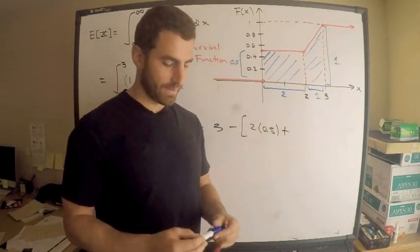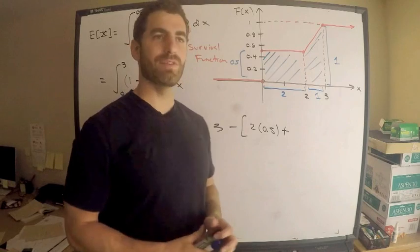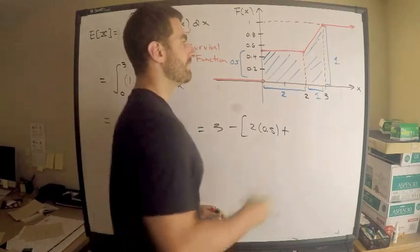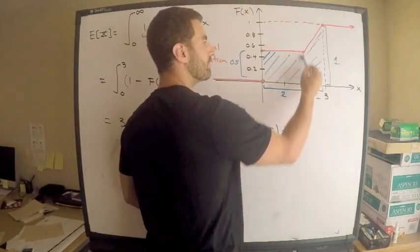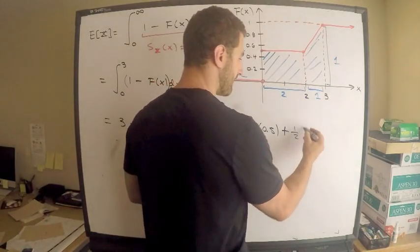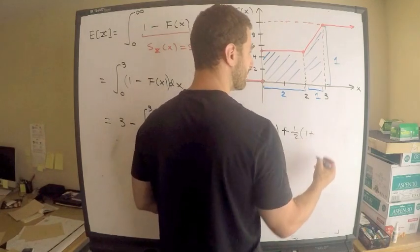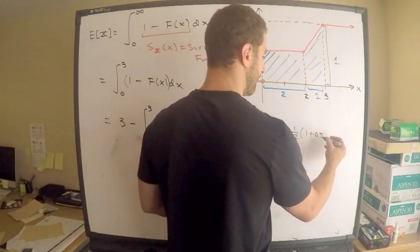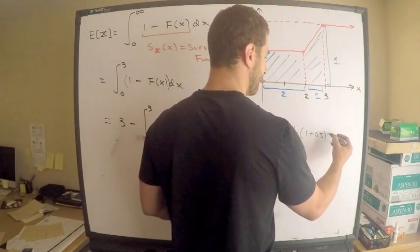It's the area of a trapezoid. It's 1.5 times the sum of the bases. The bases are 1 plus 0.5 times the height. I mean, this should be easy peasy for you. 1.5 times the sum of the bases. 1 plus 0.5 times the height, which is 1.